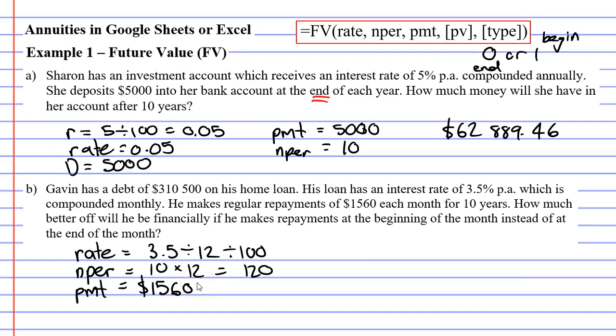$1,560. Now you might remember that repayments need to be negative, because repayments are outgoings. They're going out of your wallet. In fact, looking back at question A, I would like to change my repayment to a negative now as well. Alright, next we've got our present value. And this particular question has a present value, because at the beginning, Gavin owed $310,500, the present value being the initial investment or debt. So PV is going to be $310,500.